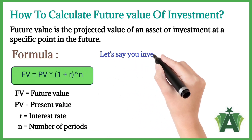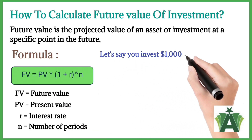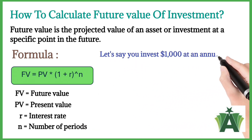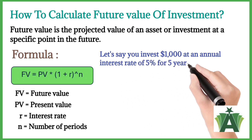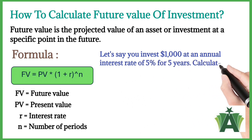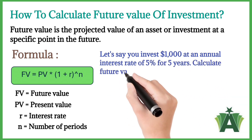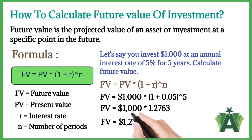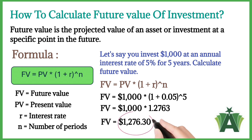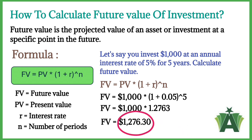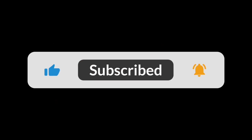Let's say you invest $1,000 at an annual interest rate of 5% for 5 years. Calculate future value. The future value of the $1,000 investment would grow to $1,276.30 in 5 years.